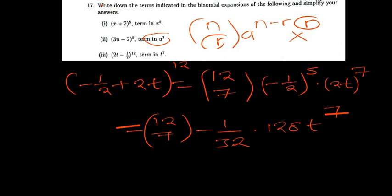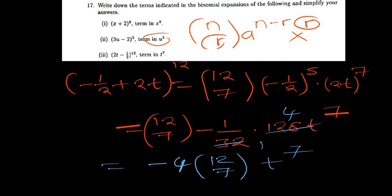Now, 32 into 64 is 2 times. In 128, it's 4 times. So, we can just end up with a negative 4, 12 choose 7, t to the power 7. I think I can just leave it there. Negative 4, 12 choose 7, t to the power 7. And that's fine. Okay, so that's it. You can simplify it beyond that point. I'll leave that to you. But this is basically how you basically get the terms and simplify them.